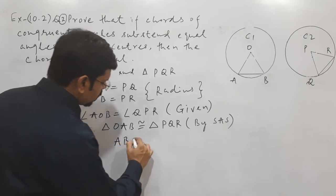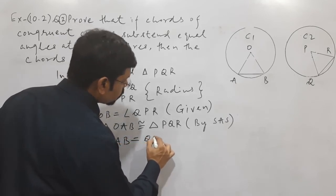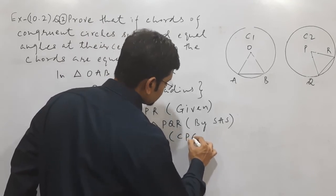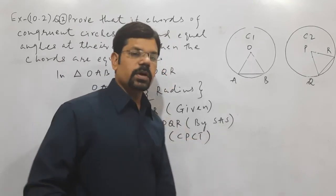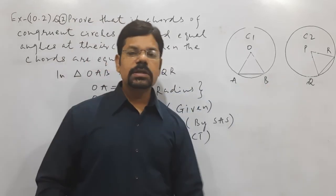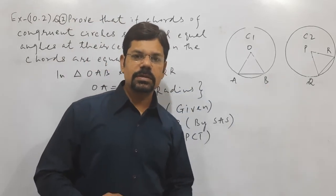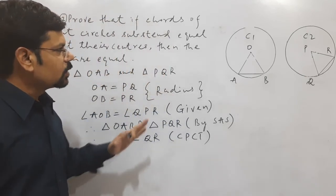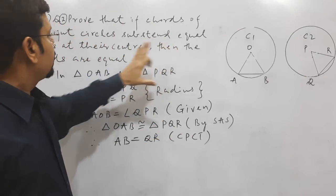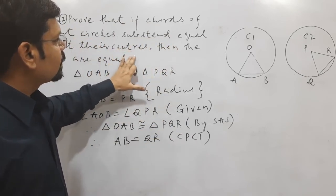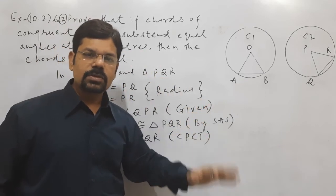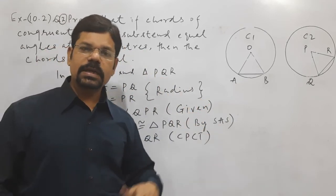Therefore AB equal to QR, this is by CPCT—corresponding parts of congruent triangles. It means AB and QR, these are two chords of these circles, congruent circles. So again we have proved that congruent circles subtend equal angles at their centers, then the chords are equal.